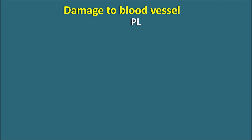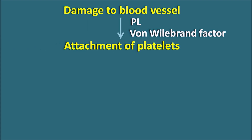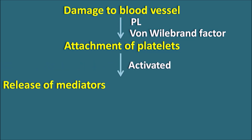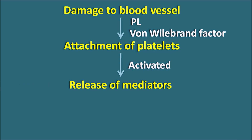But in the activation and aggregation of platelets, what are the important steps? Whenever there is damage to the blood vessel, immediately acidic phospholipids are going to be expressed at the site of injury. And one more factor, Von Willebrand factor, is going to be released, which is responsible for the attachment of the platelets at the site of injury. These factors are going to increase the attachment of the platelets. Once the platelets are attached, they undergo activation such that they release a few mediators.